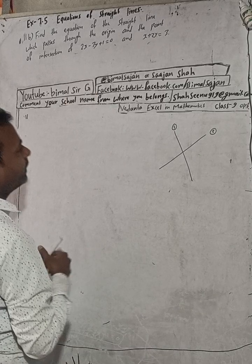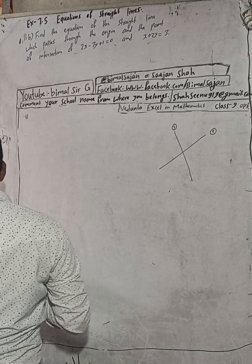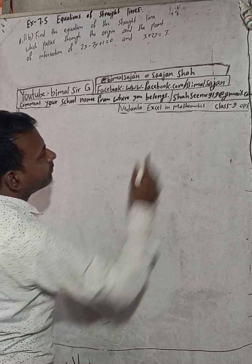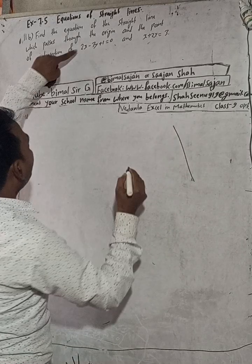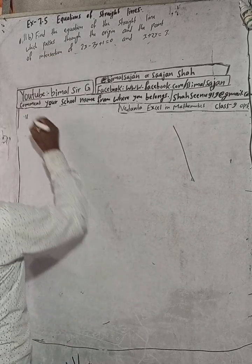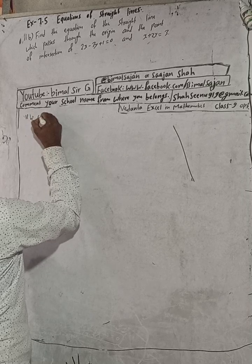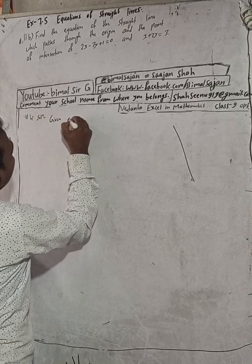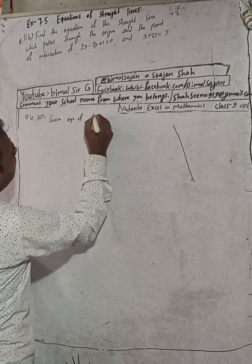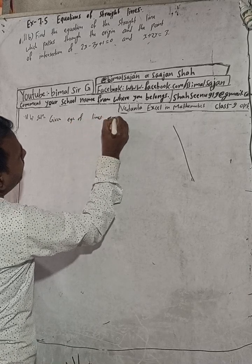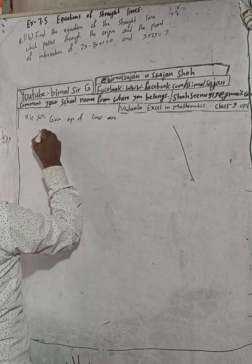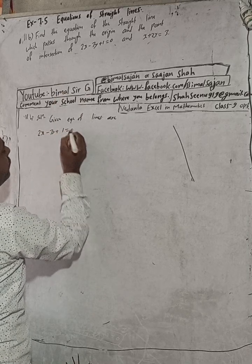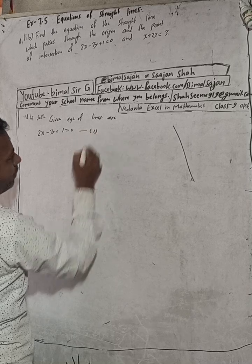So here we have two equations. This is line 1. Solution — given: equation of lines. So this is 2x minus 3y plus 1 is equal to 0. This is our equation 1.